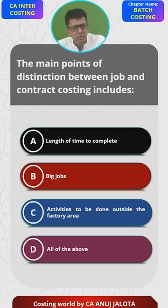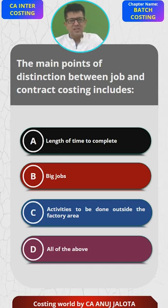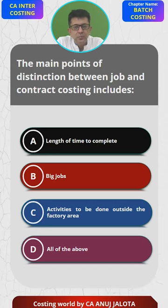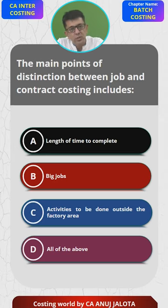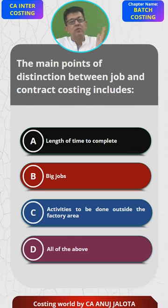Job costing is whereby you are getting a particular order to manufacture a certain type of unit for a customer. Actually, ICAI has done one error here — contract costing is not there in the new syllabus, but they have still put MCQs on it. Anyway, let's answer it. Job costing example: an interior designer — whatever he does is called job costing, whereby every type of house he makes is usually different.